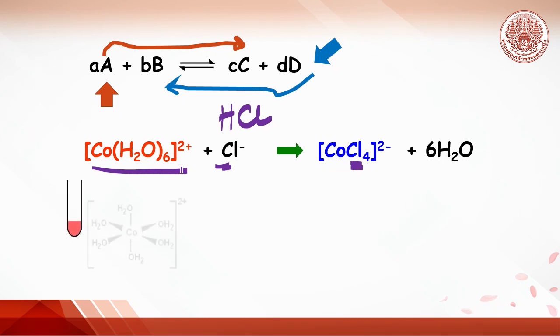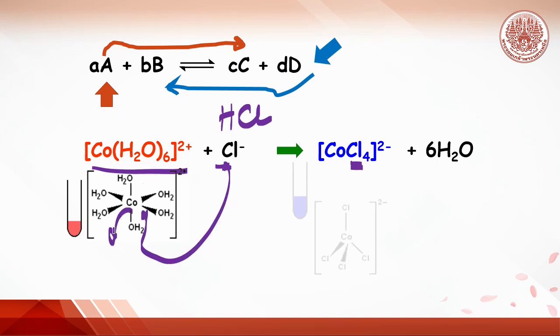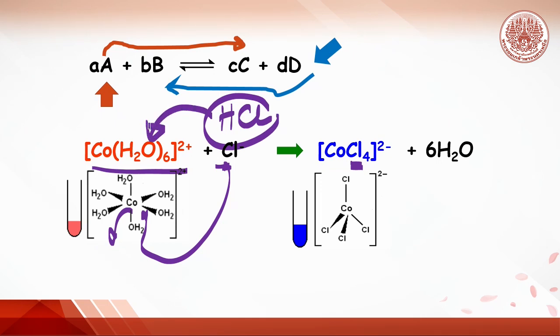How do we know about this equilibrium? Fortunately, cobalt hexa aqua is pink with octahedral structure. After replacement with chloride, the structure changes to tetrahedral, which is blue solution. Hence, if hydrochloric acid is added, the blue color will be formed. When water is added, pink color will be back.